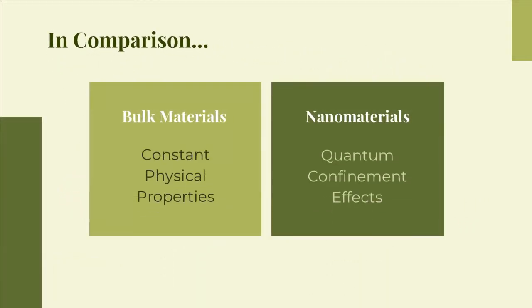A bulk material should have constant physical properties regardless of its size. But at the nanometer scale, unusual properties of matter may arise. This is a direct consequence of the size of nanomaterials, physically explained as quantum confinement effects. The result is that a material, for example a metal, when in a nano-sized form, can demonstrate properties which are very different from those when the same material is in its bulk form.